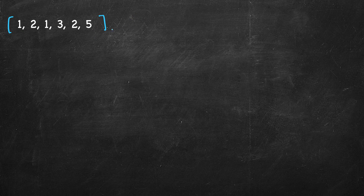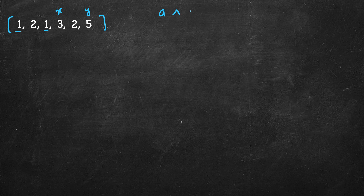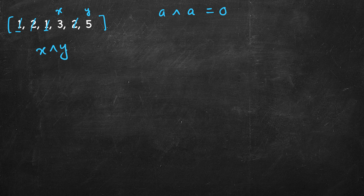Let's denote the two single numbers as x and y. When we XOR everything, the duplicate pairs cancel out — one XOR one is zero, two XOR two is zero — so the XOR of the entire array equals x XOR y, which is three XOR five. Let's capture that in a variable called xy.